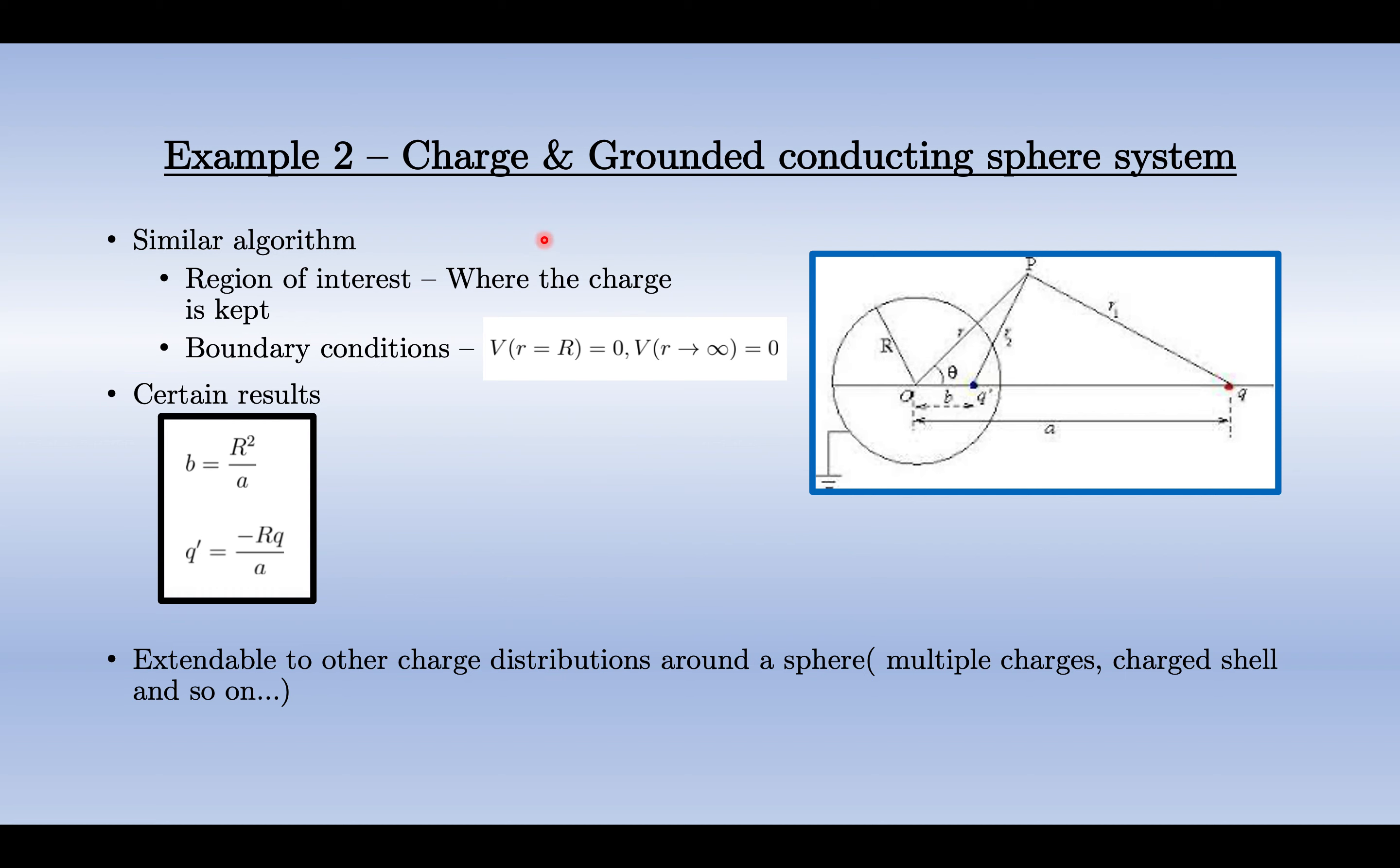The next example is the charged and grounded conducting sphere system. Here we have a conducting sphere which is grounded and we have a charge either inside or outside depending on the problem. Similar algorithm can be applied. The charge where it is kept would be the region of interest, and if it's outside then the outside region would be the region of interest and we can make changes inside the sphere.